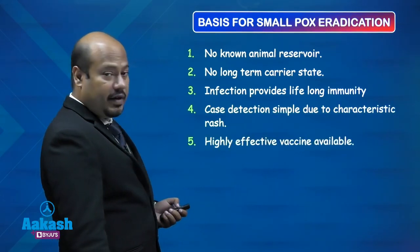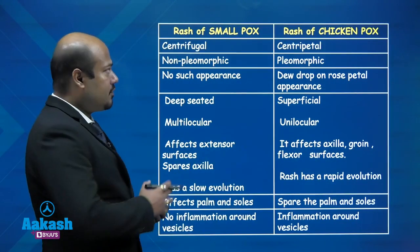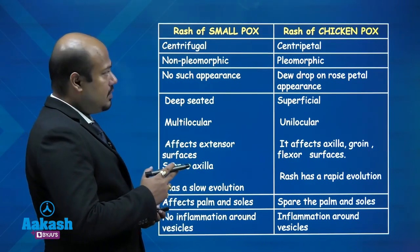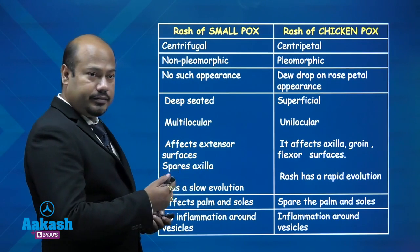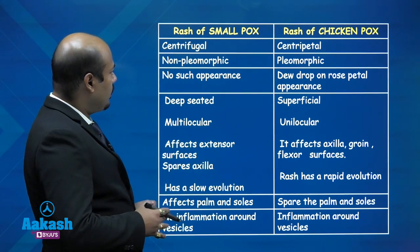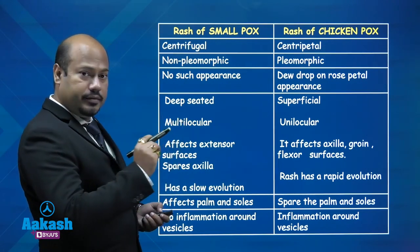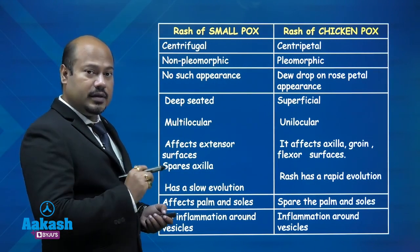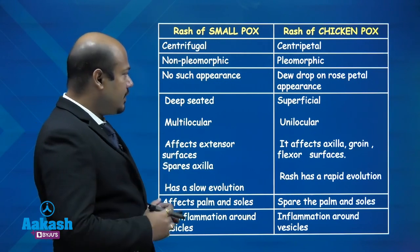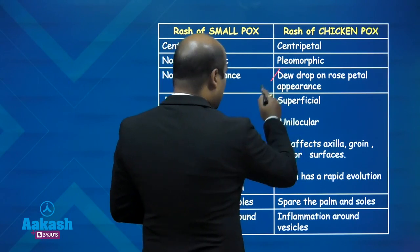The rash of smallpox is a centrifugal rash — centrifugal means away from the center. The rash of chickenpox is centripetal, meaning towards the center. The rash of smallpox is non-pleomorphic, meaning it has a specific shape and size. The rash of chickenpox has various types of shapes, so it's a pleomorphic rash. In fact, the rash of chickenpox is known as 'dew drop on rose petal' appearance.